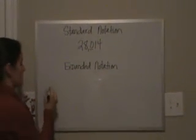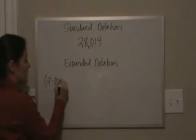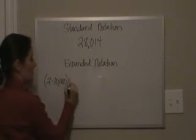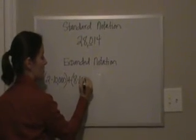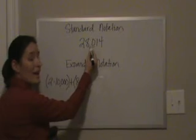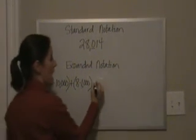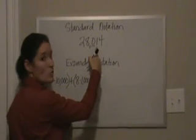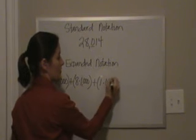So we're going to say 2 times 10,000, plus 8 times 1,000. I don't have any 100s. That's what the zero means. So I'm going to just skip it altogether. I'm going to skip right to my 1, which is in the tens place, and say 1 times 10,